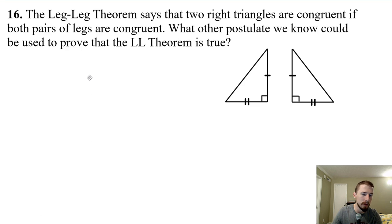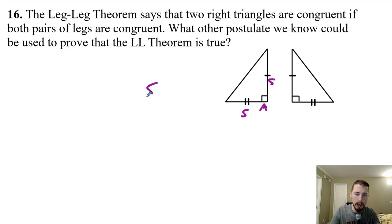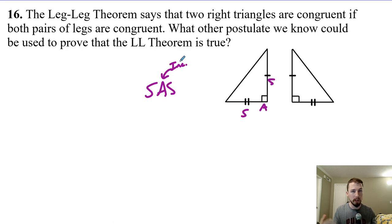Number 16: the leg-leg theorem says that two right triangles are congruent if both pairs of legs are congruent. What other postulate can be used to prove that the leg-leg theorem is true? Well, if we have the right angles and both legs are the same, the postulate we're actually using is side-angle-side, where the angle is included in between the two sides. So the leg-leg theorem is just a special case of the SAS postulate. There's really no reason to memorize it. We teach the hypotenuse-leg theorem because that stands alone as a replacement for the donkey postulate, which we can't use.